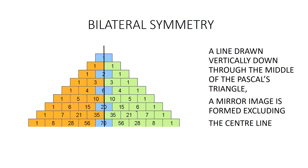The first property is bilateral symmetry. A vertical line drawn through the middle of Pascal's Triangle divides the triangle into two identical halves like mirror images, excluding the entries that fall on the vertical line.